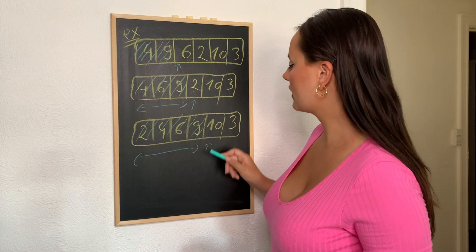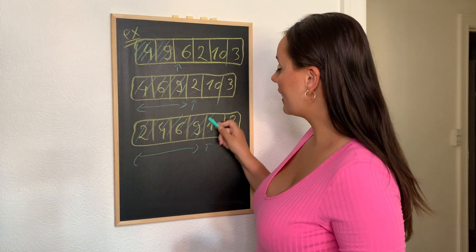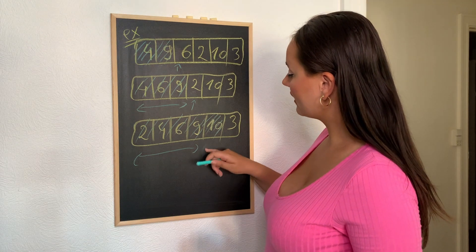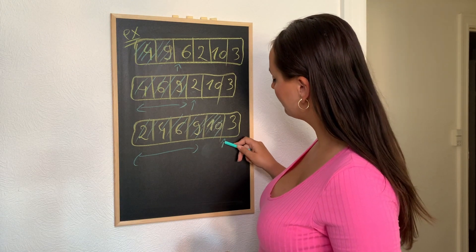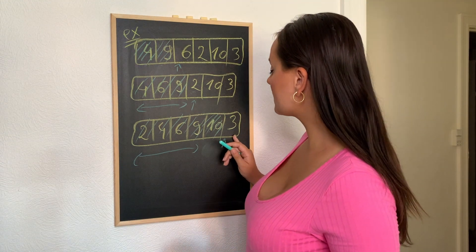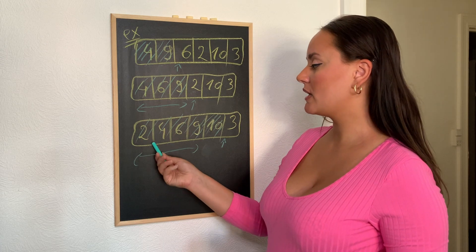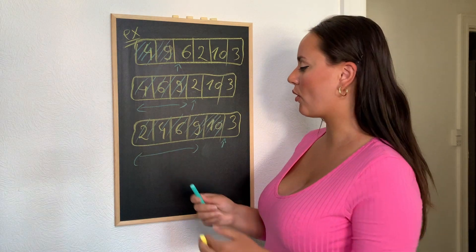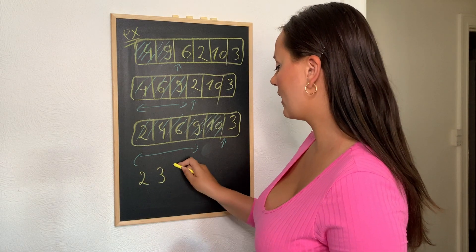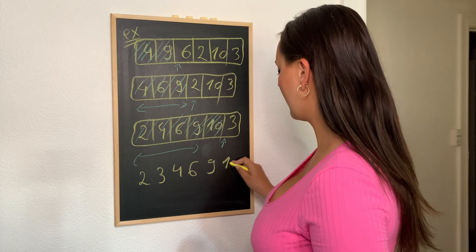Now we look at 10. Since 10 is the biggest element in our list, we add it directly to our sorted array. For the last part, we move our current element to 3. Comparing 3 to the elements on its left, we can see that 3 needs to go between 2 and 4. So our sorted array would look like this: 2, 3, 4, 6, 9, and 10.